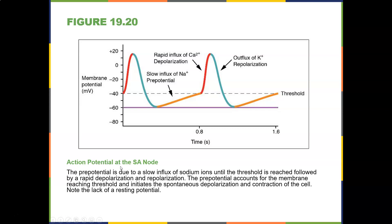At the SA node, the pre-potential is due to a slow influx of sodium ions until the threshold is reached, followed by rapid depolarization and repolarization. There's a slow sodium influx until the threshold of about minus 40 millivolts is reached, then a rapid depolarization shoots the potential positive to about plus 20 millivolts, then it repolarizes back down to around minus 60 millivolts, and the cycle repeats.